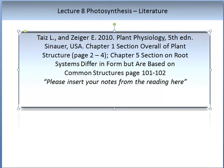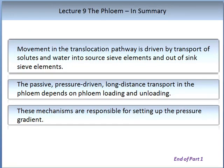Please use the recommended textbook Taiz and Zeiger 2010 Plant Physiology fifth edition to read the section on overall plant structure in chapter one, pages two to four, and chapter five on the section on root systems, pages 101 and 102. Make notes on these readings and insert them into your lecture notes. In summary, the phloem has an intricate mechanism in which the translocation pathway is driven by the transport of solutes and water into the source sieve elements and out of the sink sieve elements. We have learnt about the passive, pressure-driven long-distance transport that occurs in the phloem, which enables loading and unloading and is responsible for setting up the pressure gradient in plants. This is the end of part one.